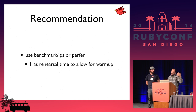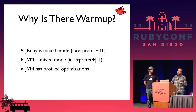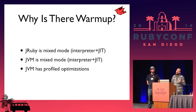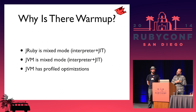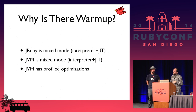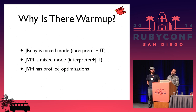The recommendation for people who want to do some benchmarking is to use a tool like Perfer or Benchmark IPS. These have rehearsal phases that try to eliminate warm-up time from the final numbers reported. Some people wonder why there's even a warm-up time. A mixed-mode runtime means the interpreter is slower than the JIT — until it JITs, it runs slower then gets faster. The JVM is also mixed-mode: once we generate Java bytecode, that bytecode is interpreted and then compiled to native code if it's hot.